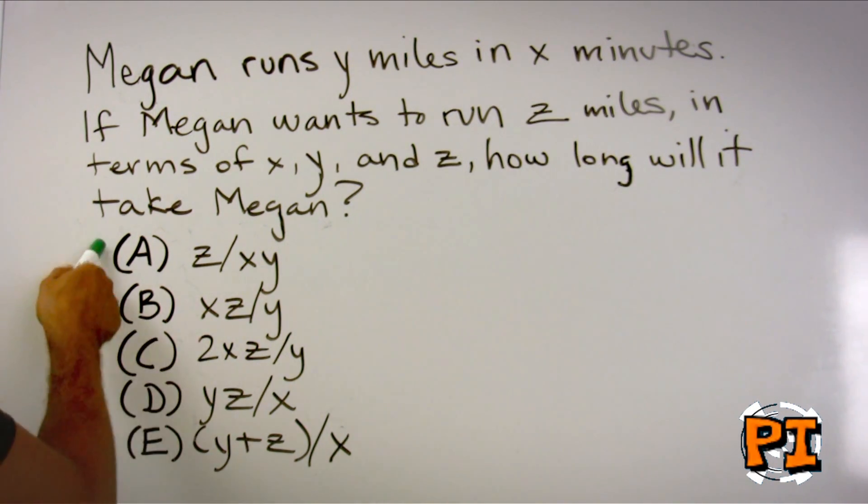However, because you have variables in the answer choices and variables in the problem, you can come up with your own numbers and turn this into a basic arithmetic question. It is important, however, to use numbers that make the question easier.